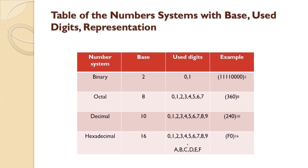Let us first look at binary number system. Its base is 2 because it has only 2 digits, that is 0 and 1. For example, see the combinations of 1s and 0s shown in brackets with subscript 2. The subscript 2 represents binary number system. Only 2 digits — 0 and 1 — are used, that is why its base is 2.